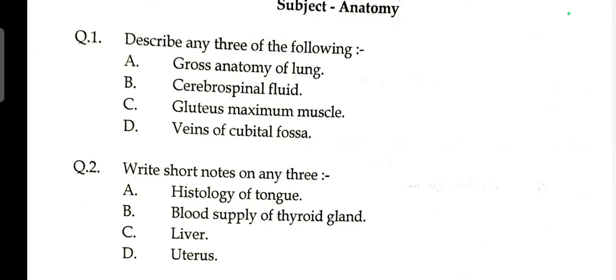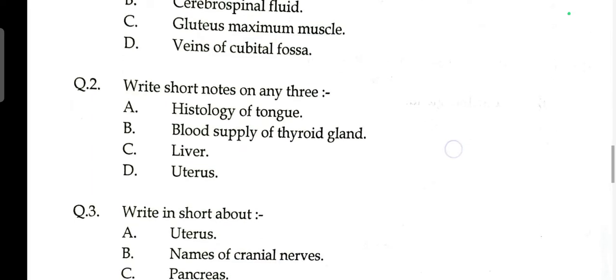Question number one: describe the following — gross anatomy of the lung, cerebrospinal fluid, gluteus maximus muscles, and veins of the cubital fossa.